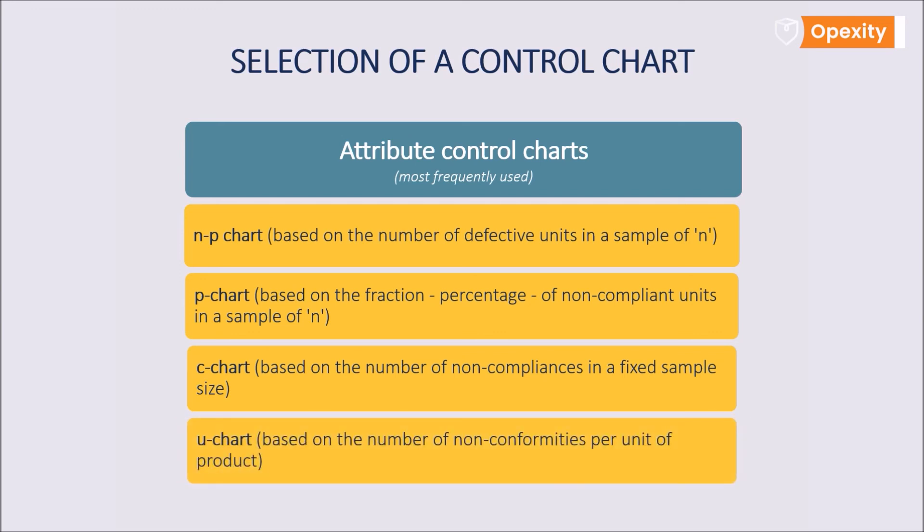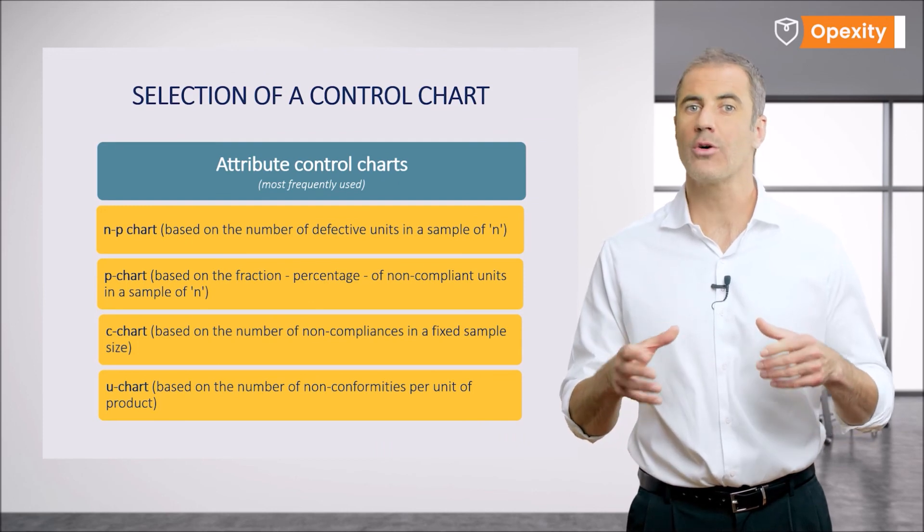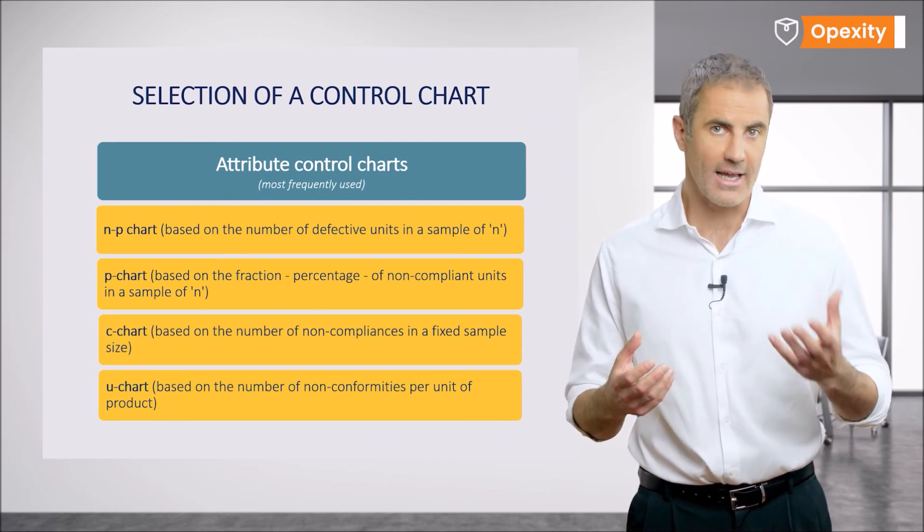U chart, a U chart is built upon the number of non-conformities per unit of product. This indicator is calculated as the ratio of the number of defects to the number of units tested, for example length of pipe, number of lots.